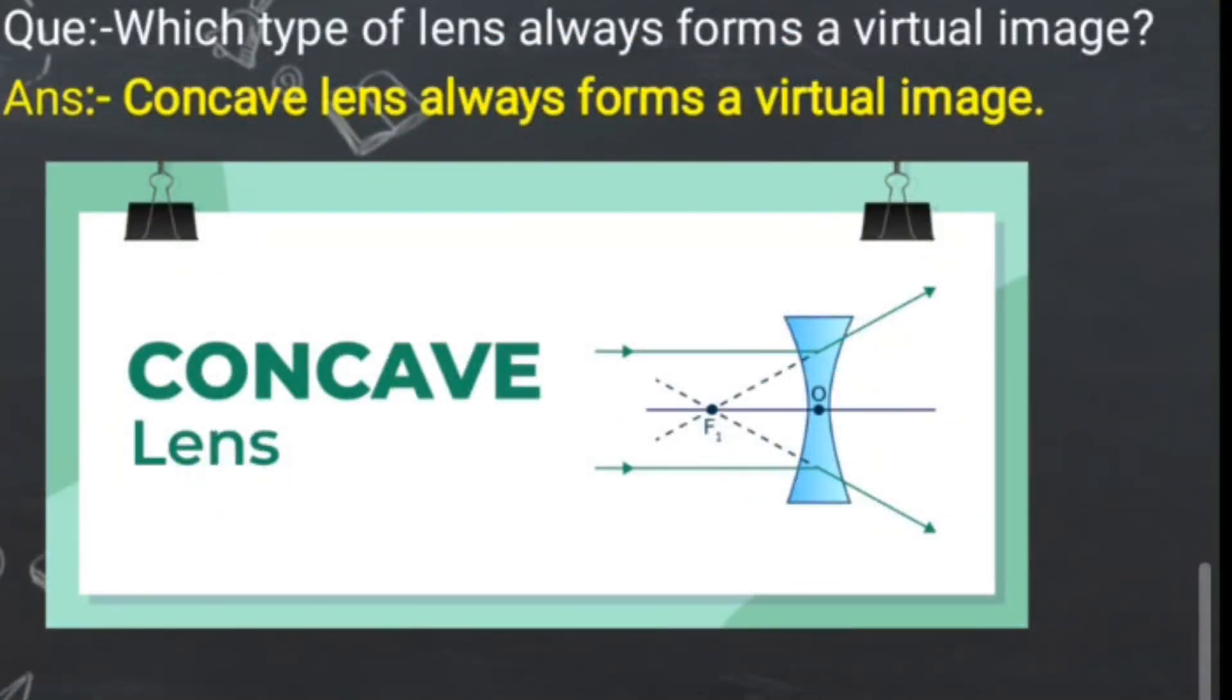Which type of lens always forms a virtual image? Which type of lens always forms a virtual image? Which type of lens always forms a virtual erect image?